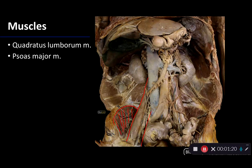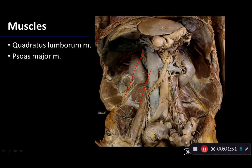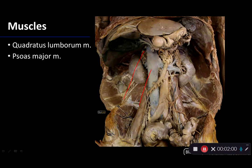The other muscle we'd like you to know about is the quadratus lumborum. The quadratus lumborum is a very deep back muscle, sometimes categorized — and probably rightfully so — as the deepest abdominal muscle. It sits posterior to the kidneys. It arises from the inferior margin of the 12th rib as well as the transverse processes of the first four lumbar vertebrae.